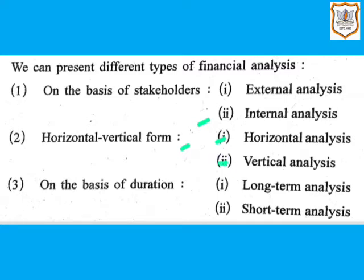Vertical analysis is made to review and analyze the financial statements of one year only. Ratio analysis of the financial statement relating to a particular accounting year is an example of this type of analysis. Common size statements are also an example of this type. Such analysis is useful in comparing the performance of several companies of the same type, or divisions or departments in one enterprise. Dynamic or horizontal analysis is a time series analysis, and static or vertical analysis is carried out at one particular point of time, generally when the accounts are closed.